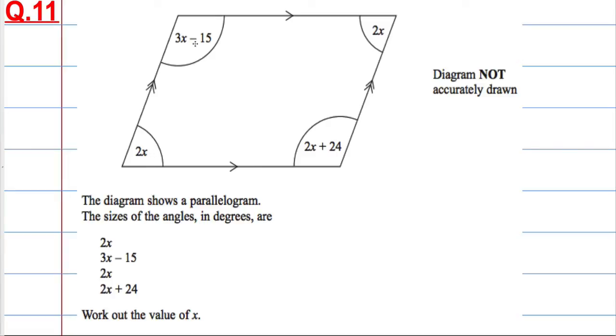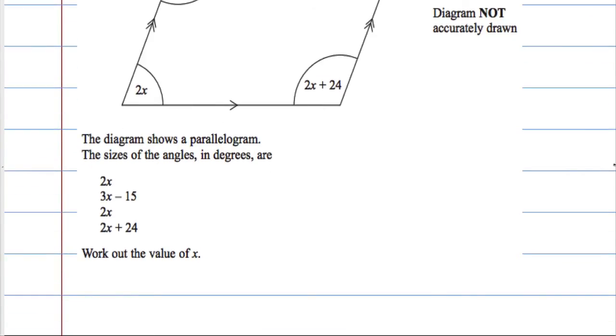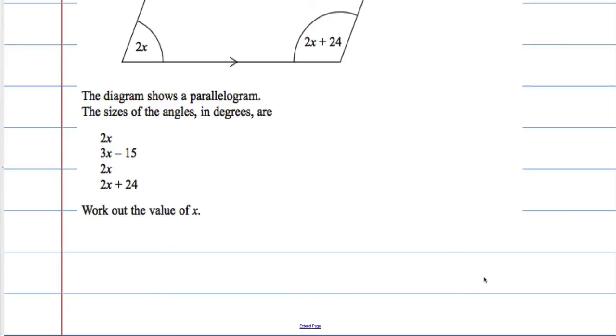So what I need to think of is because it is a parallelogram, what is the total number of degrees in the shape. Hopefully with a little bit of thought you should remember that a parallelogram, four sided shapes, all quadrilaterals have 360 degrees in them. So this parallelogram has to be no different. So the total is going to be 360 degrees.